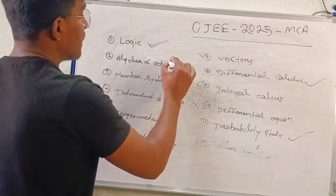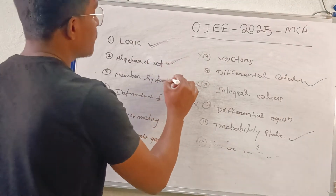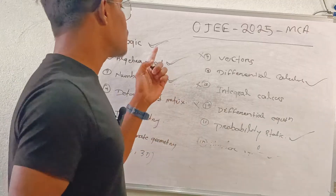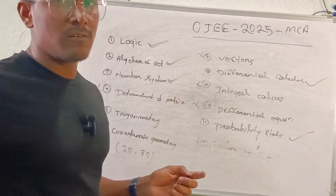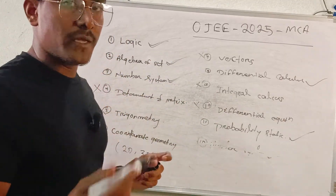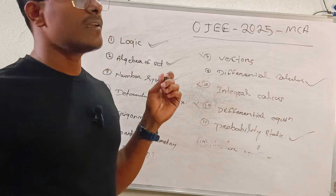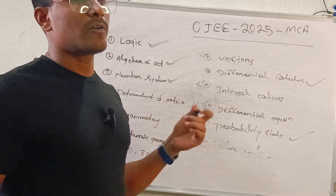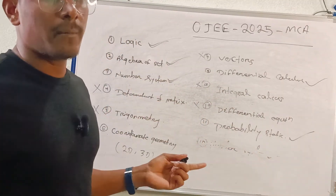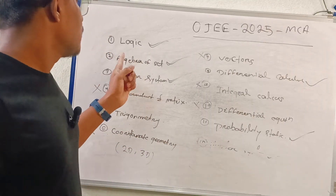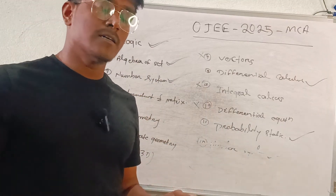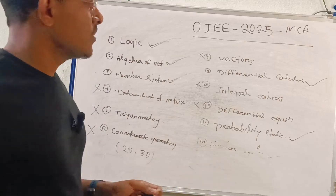Logic builds, Algebraic Set, Number System — these are the key ones. You can use a YouTube channel to study. You can also use Wikipedia and get prepared, as they have already been certified. If you want to study Number System and Logic, you can study via YouTube channel.